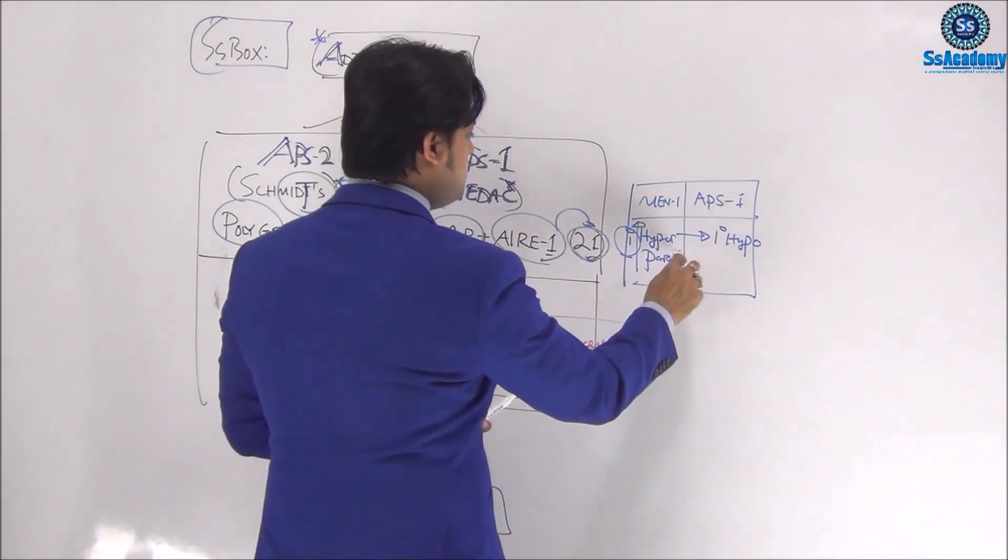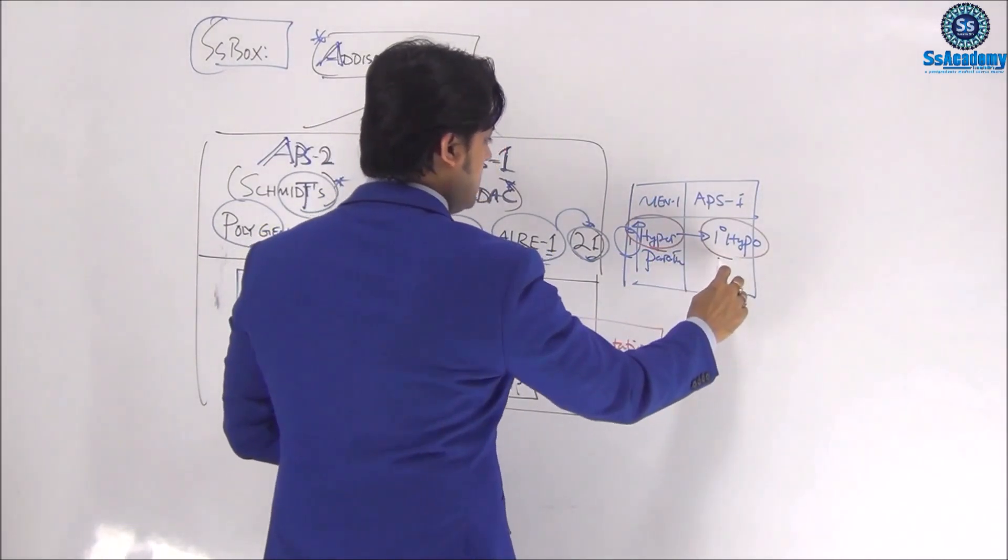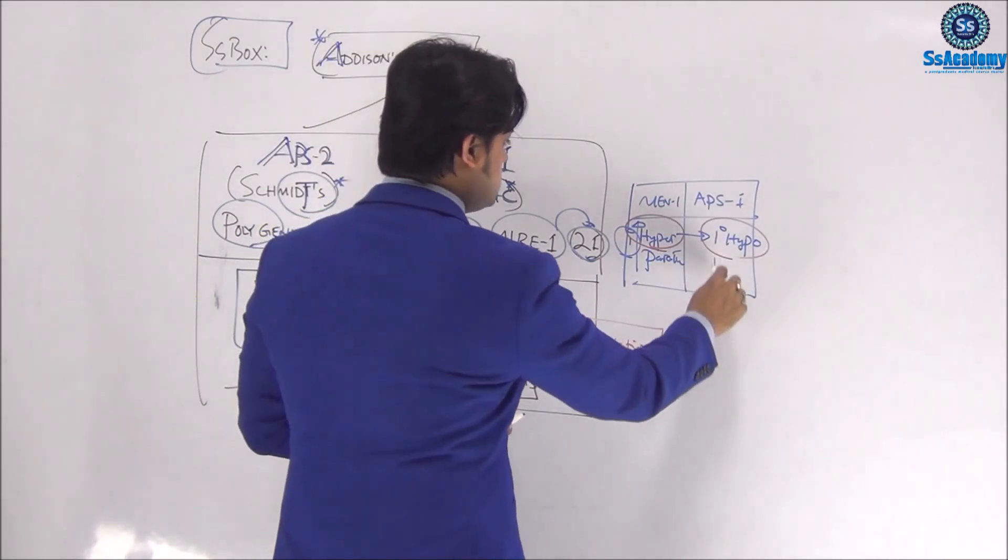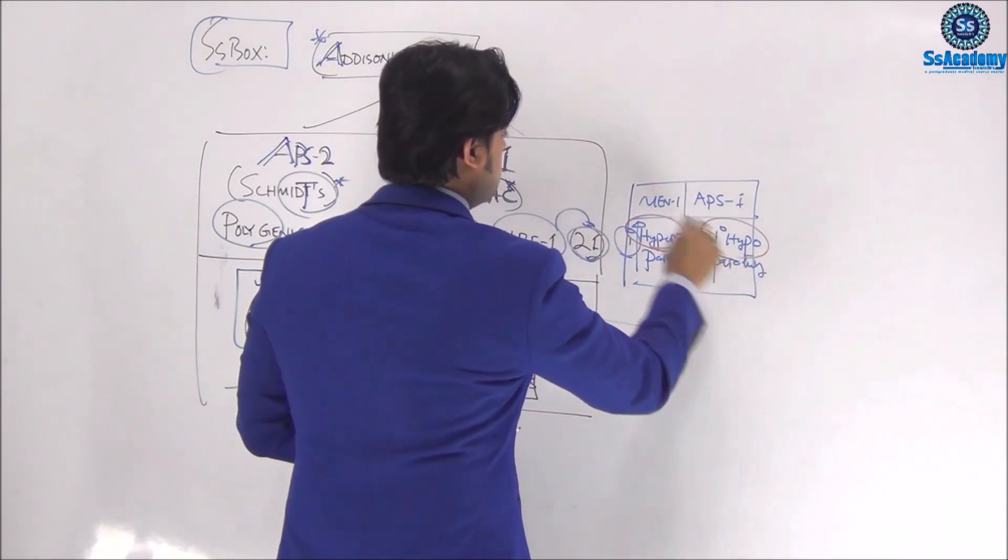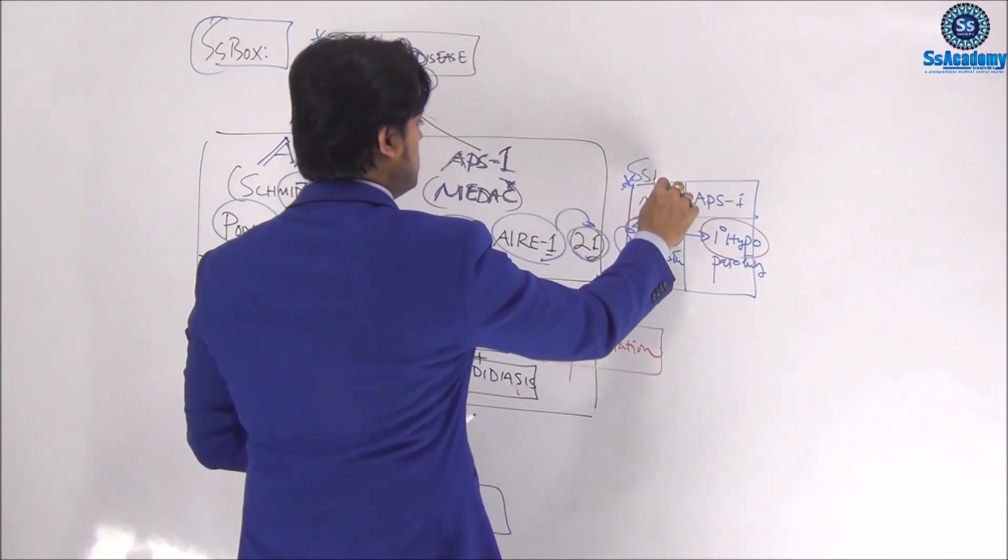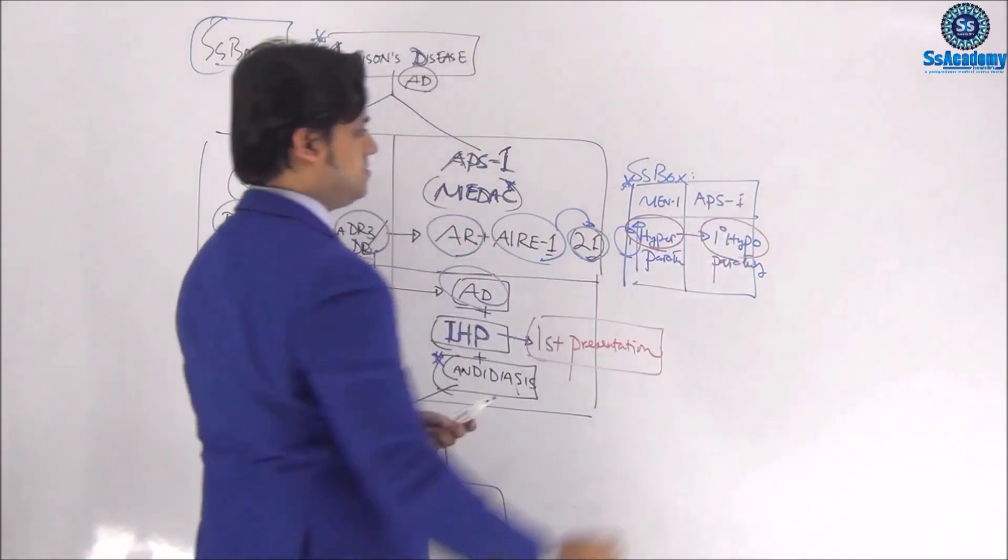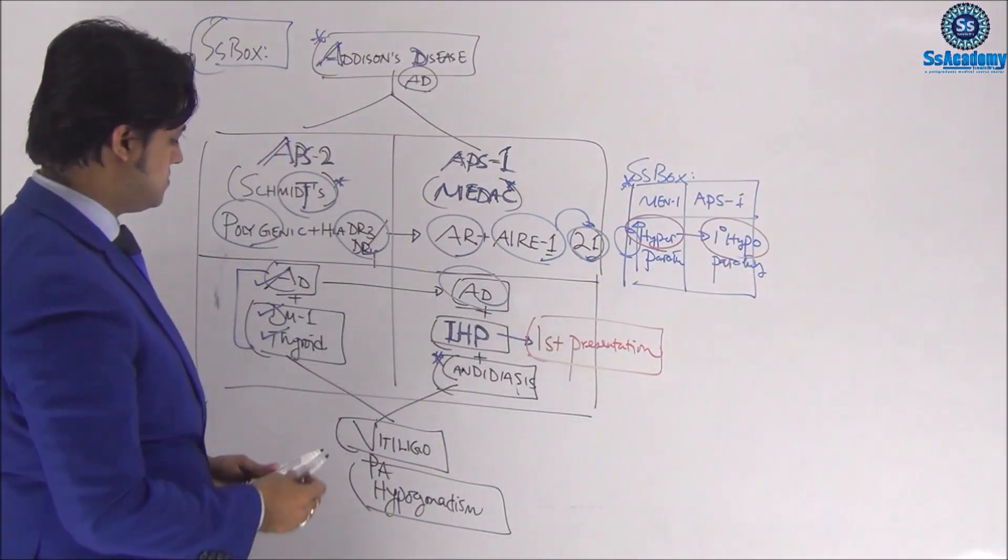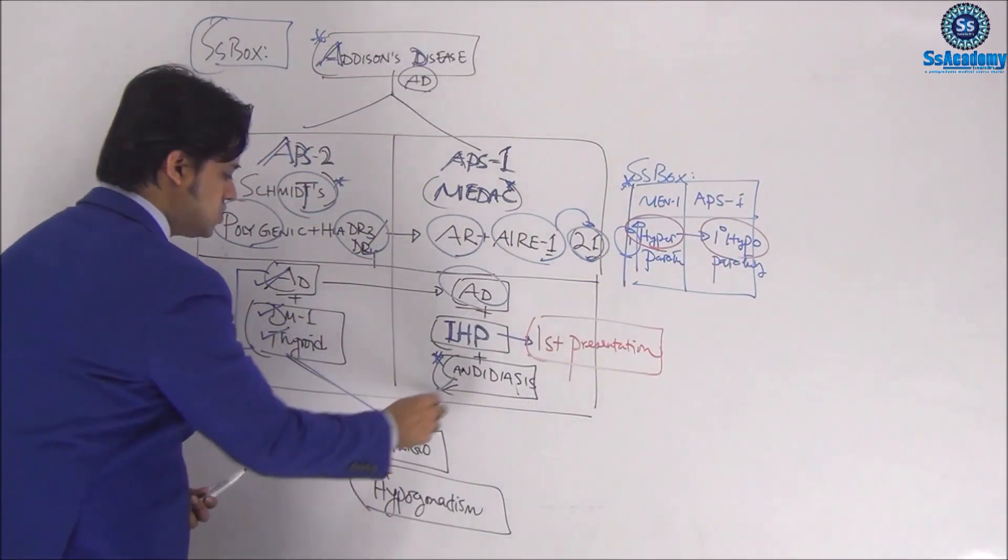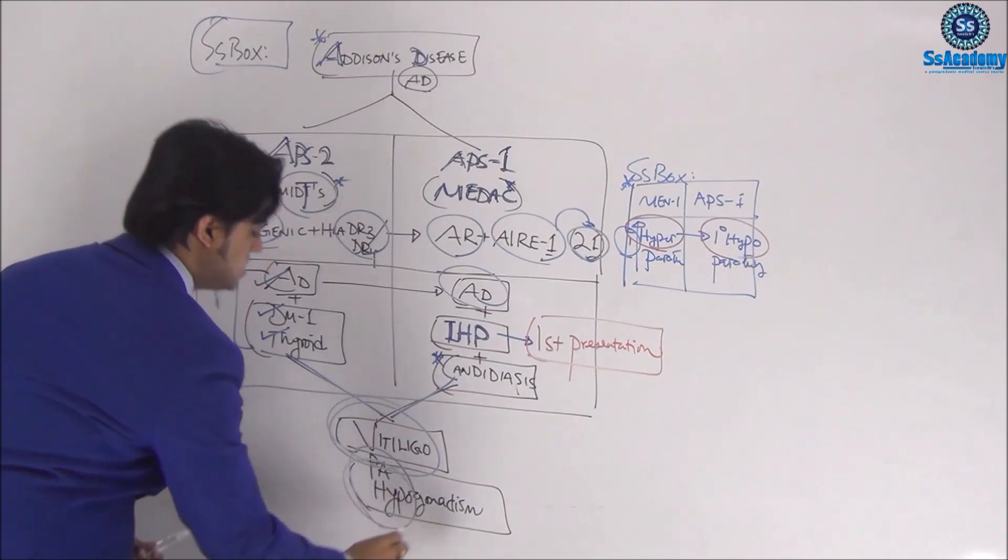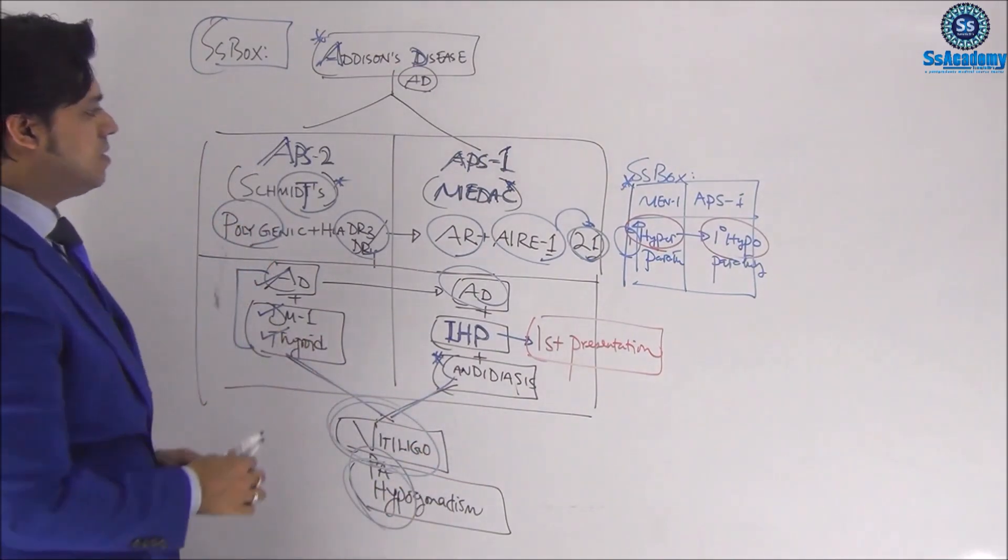So hyper- and hypoparathyroidism are features we can remember. This compare-and-contrast box will be helpful. Both are strongly associated with vitiligo, along with pernicious anemia and hypogonadism. This usually comes up in your exam—a five-star topic.